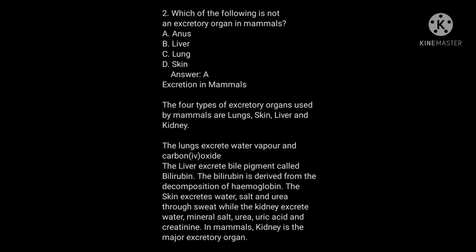The lungs excrete water vapor and carbon dioxide. The liver excretes bile pigment called bilirubin, which is derived from the decomposition of hemoglobin. The skin excretes water, salt, and urea through sweat, while the kidney excretes water, mineral salts, urea, uric acid, and creatinine. In mammals, the kidney is the major excretory organ.